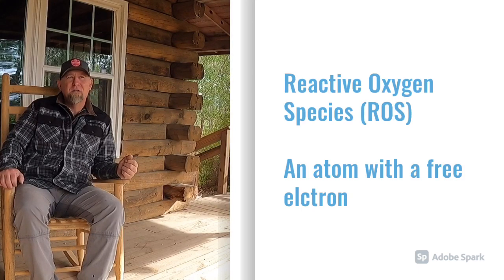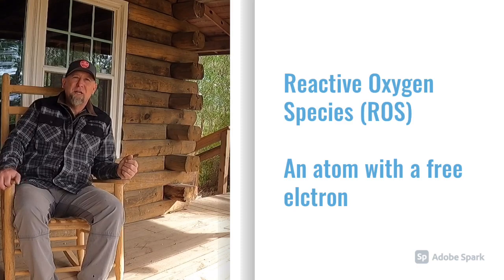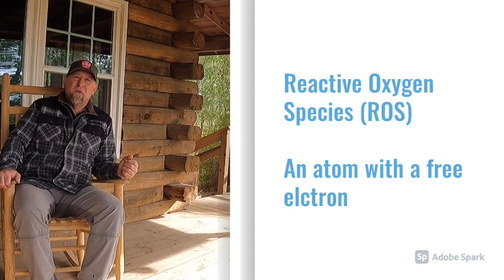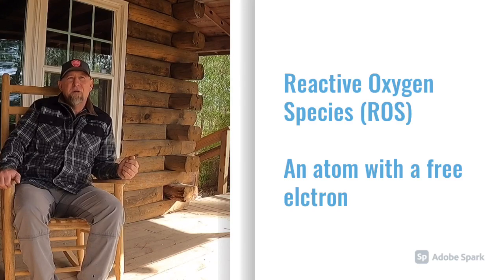What is a reactive oxygen species? They're also known as free radicals. They're associated with oxidative stress, and basically all it is is an atom that has an unpaired electron. In the body, that would often be an atom of oxygen that lost an electron, giving it a strong propensity to bond with something. The other common byproduct is nitric oxide, so those are the two most common free radicals found in the body.